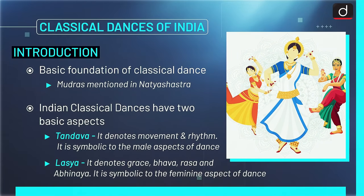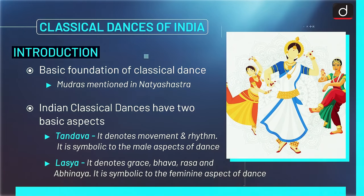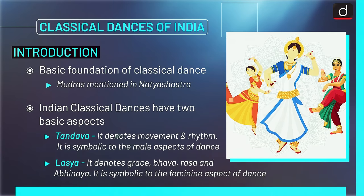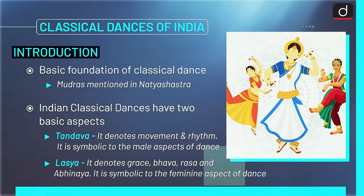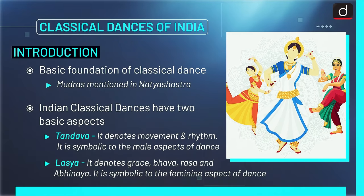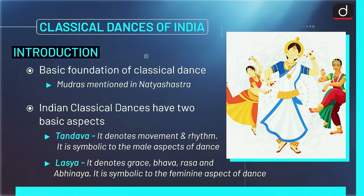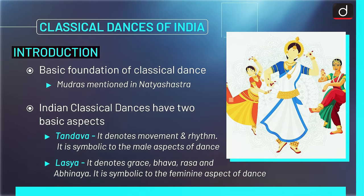Indian Classical Dances have two basic aspects. First, Tandav — it denotes movement and rhythm, and is symbolic of the male aspects of dance. Second, Lashya — it denotes grace, bhav, ras and abhinay, and is symbolic of the feminine aspect of dance.